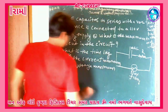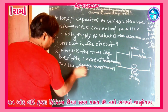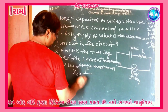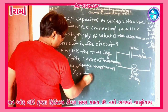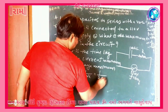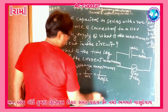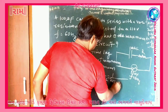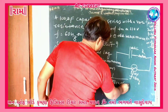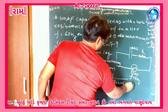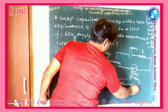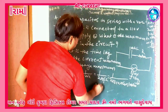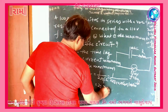We know that Xc is equal to 1 upon omega times c, which equals 1 upon 2 pi f times c. Keeping this value: 1 upon 2 pi, that is 3.14, times f = 60, times c = 100 times 10 to the power minus 6. So we get Xc = 25.54 ohm.